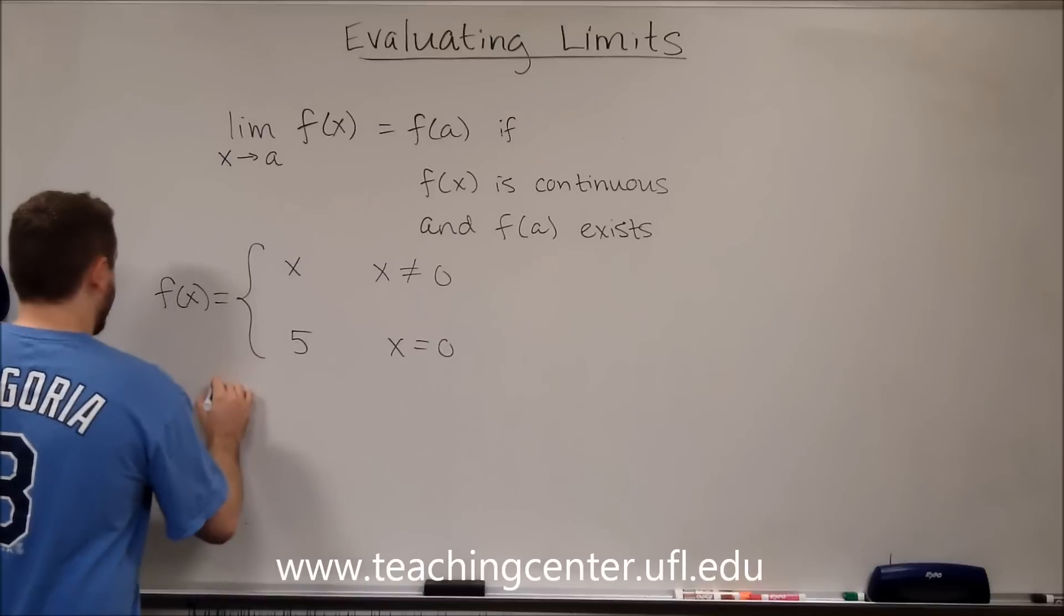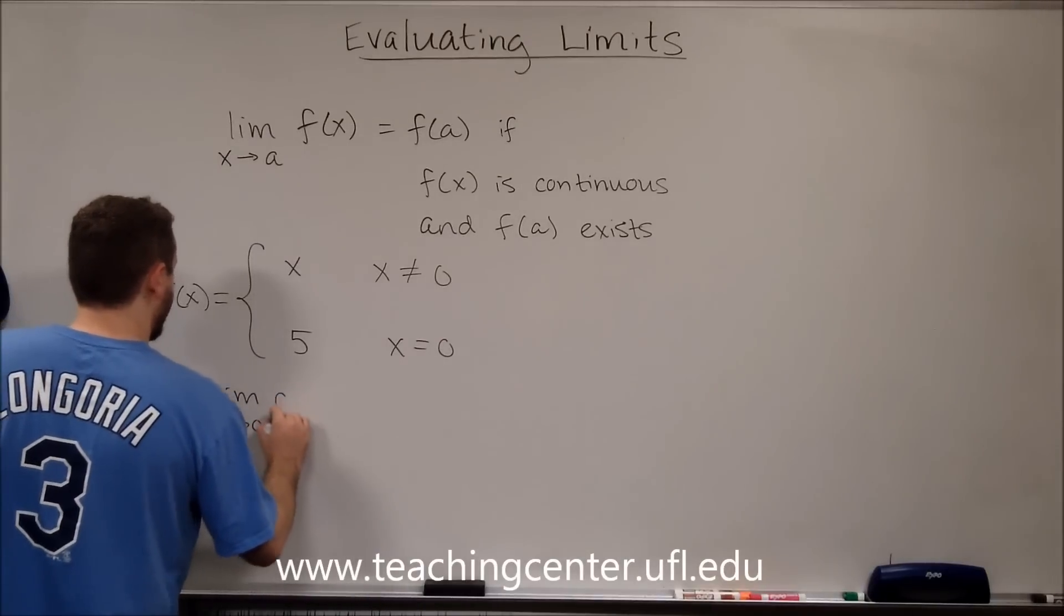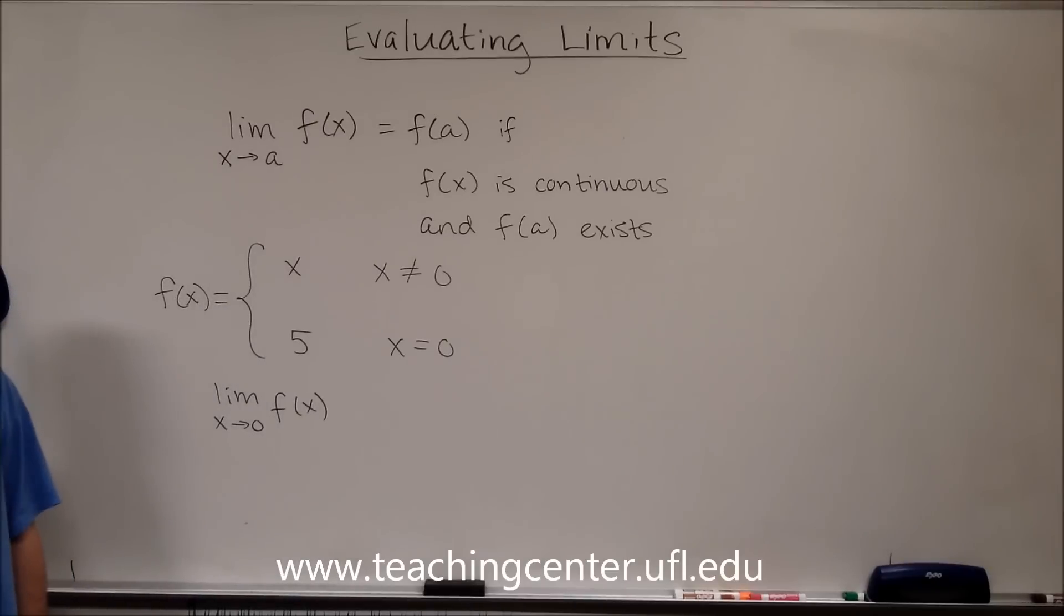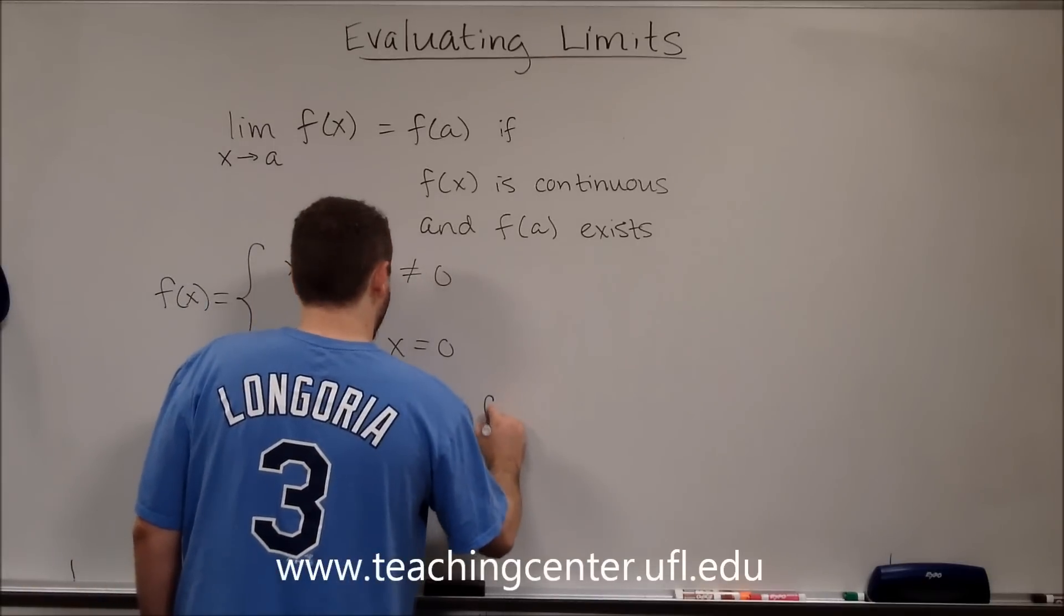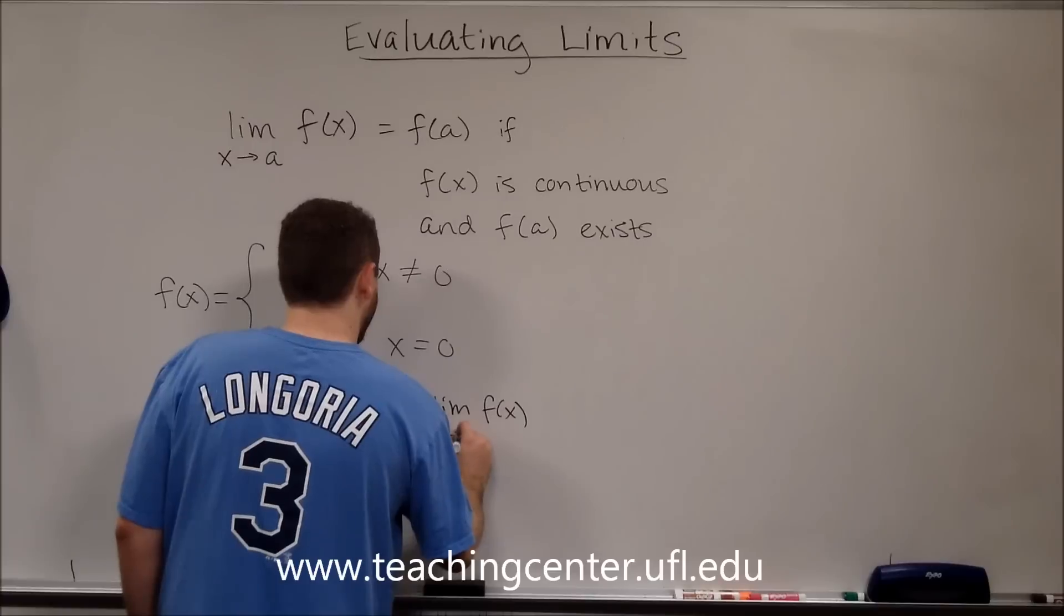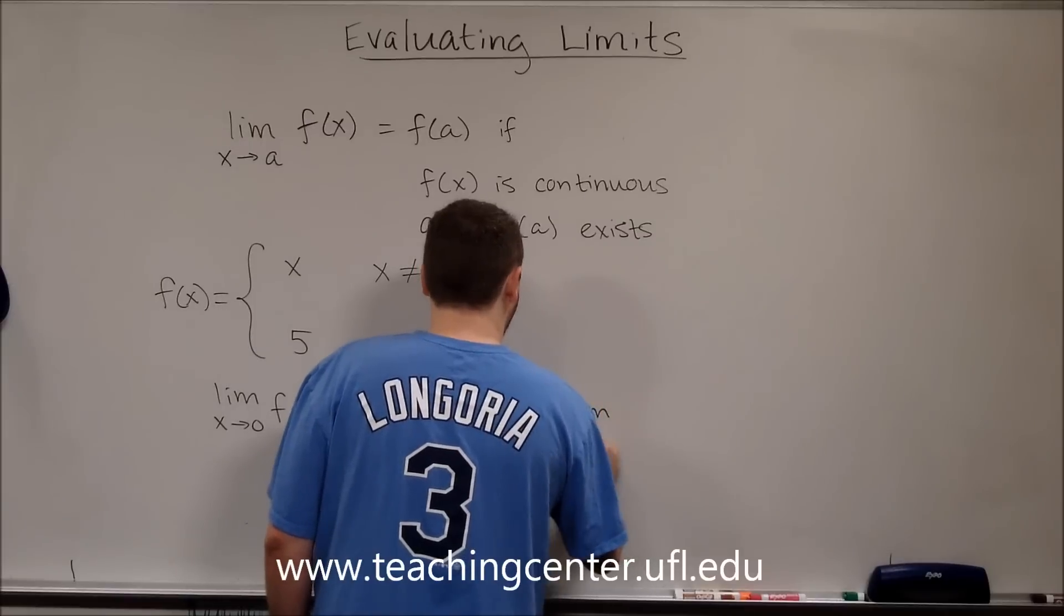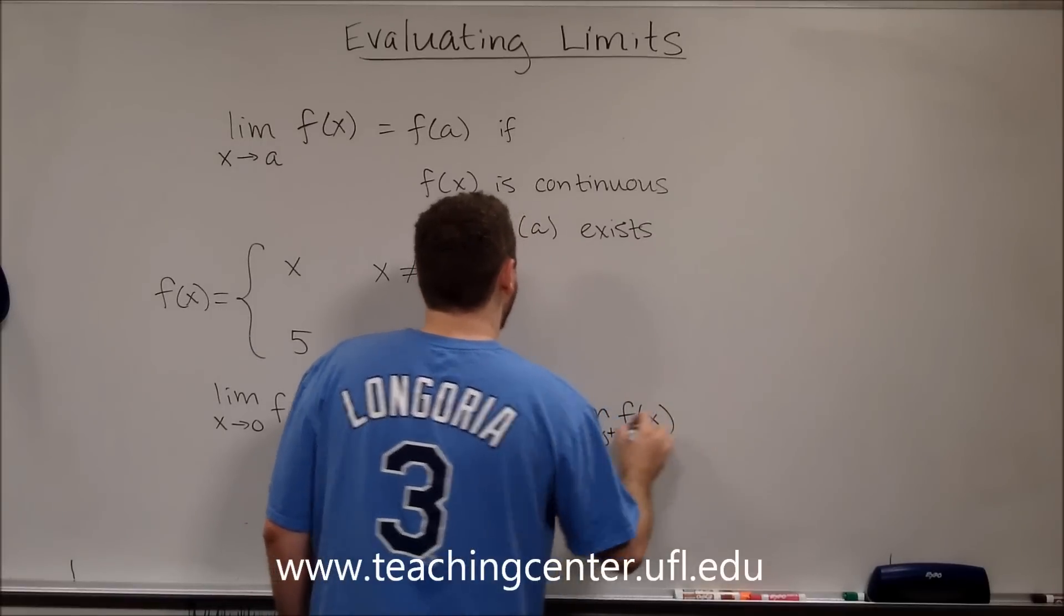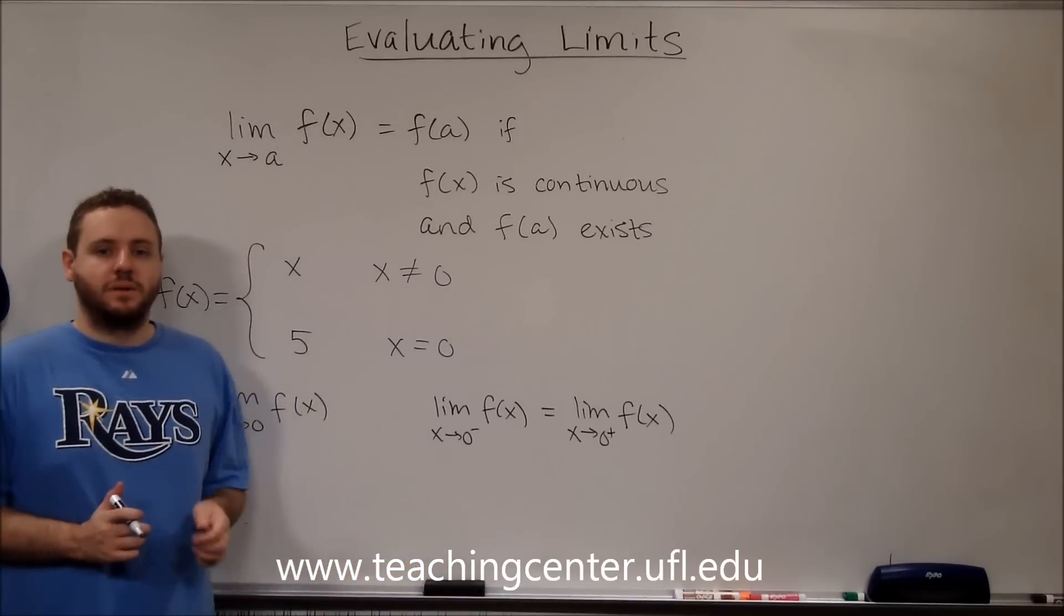So to find out the limit as x approaches zero of f of x here, we know that that will only exist if the limit as x approaches zero from the left equals the limit as x approaches zero from the right. If both of those are equal, then this limit will exist and it will be equal to those.